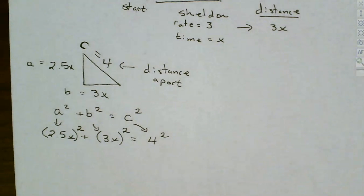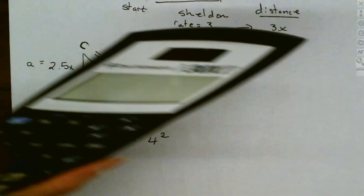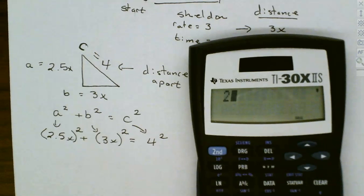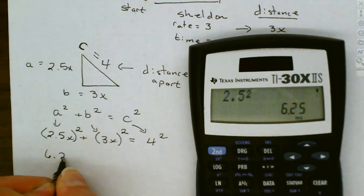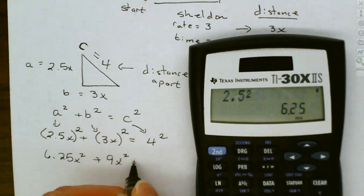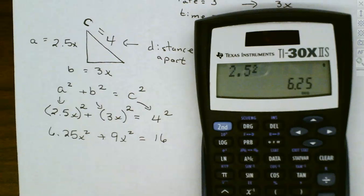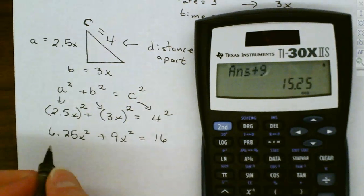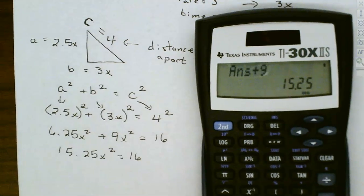Be careful with that 2.5 — it has to be squared. Using our calculator, 2.5 squared is 6.25. 3 squared is 9, and 4 squared is 16. Adding those together: 6.25x squared plus 9x squared equals 16, which gives us 15.25x squared equals 16.